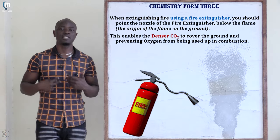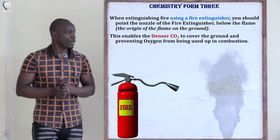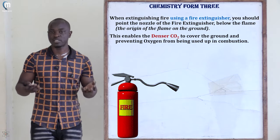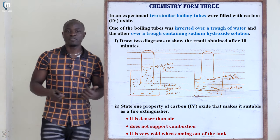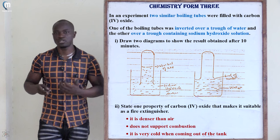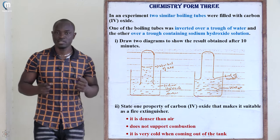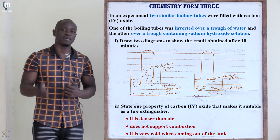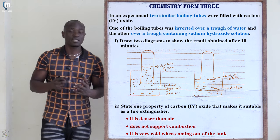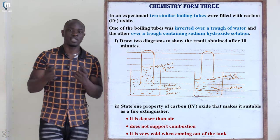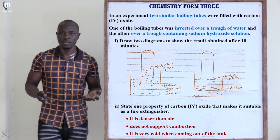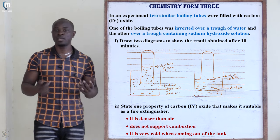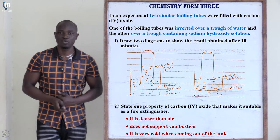Since carbon dioxide is denser than air, it occupies the area at the base of the flame previously occupied by oxygen, cutting off the oxygen supply needed for combustion. Additionally, carbon dioxide does not support combustion, so it can be used effectively in fire extinguishing. Furthermore, carbon dioxide leaving the fire extinguisher is very cold, allowing it to cool the flame rapidly. Where there is no heat, there can be no flame, so the cooling effect also leads to extinguishing.